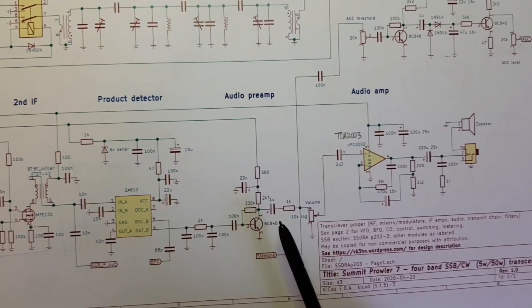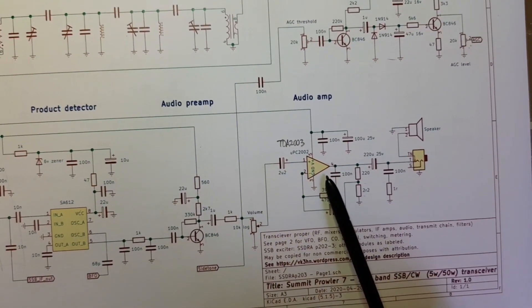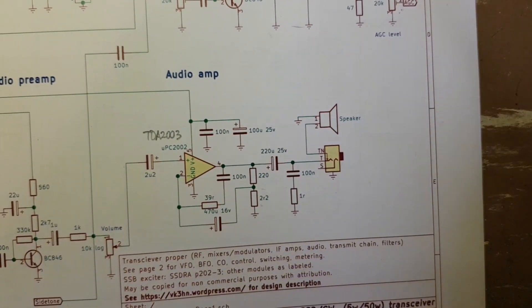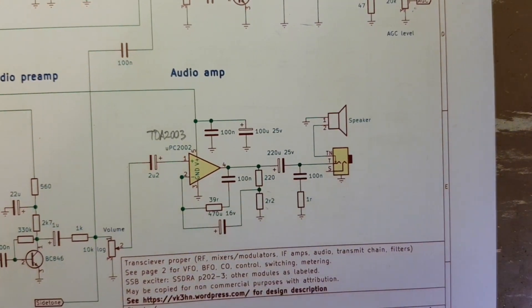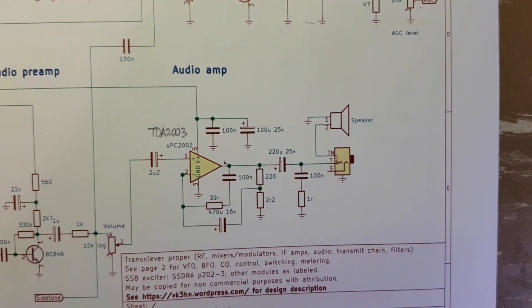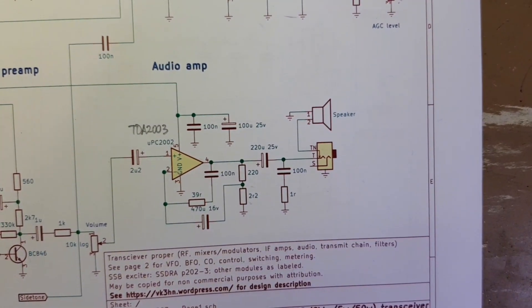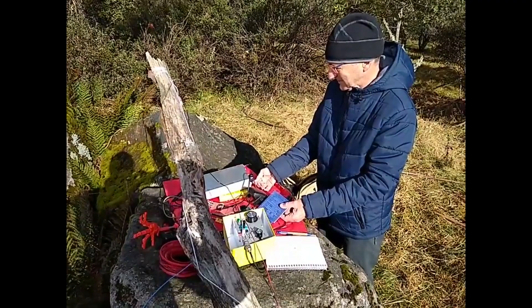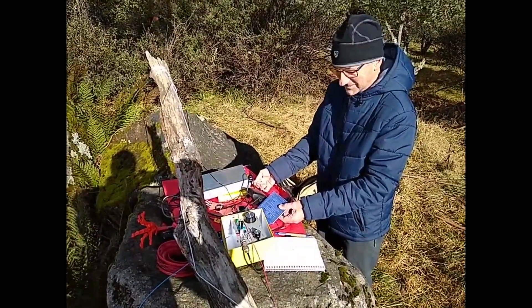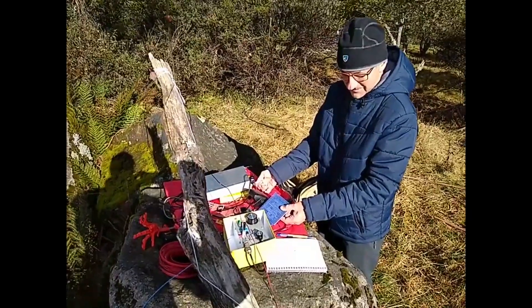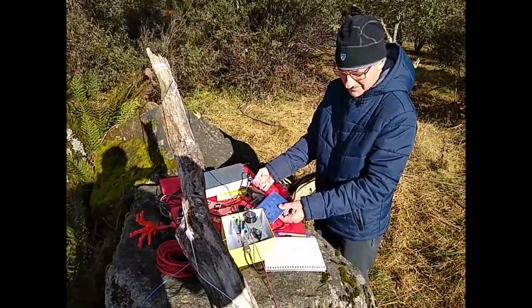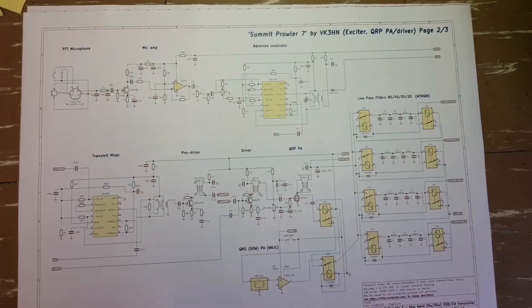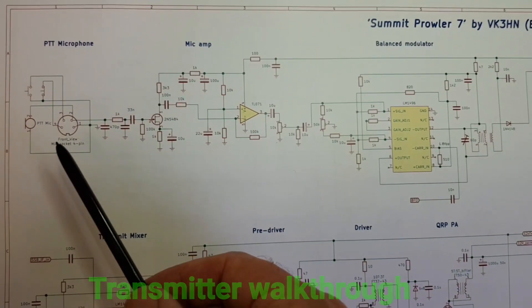SA612 product detector, an audio preamp and an audio amp. I tend to use these TDA 2003s, also UPC 2002s. They give a good three or four watts of audio and plenty of punch, doesn't get drowned out by strong winds on a summit. Onto the transmitter, again completely conventional.